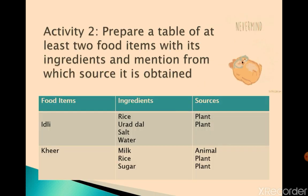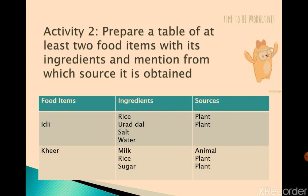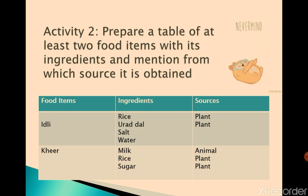Now let us do another activity: prepare a table of at least two food items with their ingredients and mention from which source each is obtained. Let's take the example of Idli. For preparing Idli, the ingredients used are rice, urad dal, salt, and water. Rice is obtained from a plant, and urad dal is also obtained from a plant.